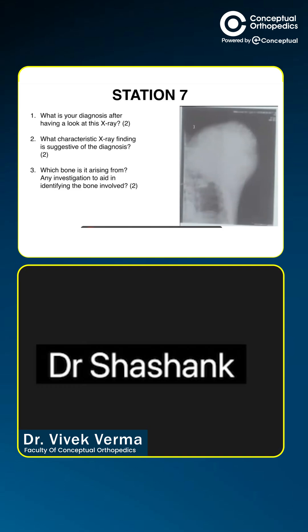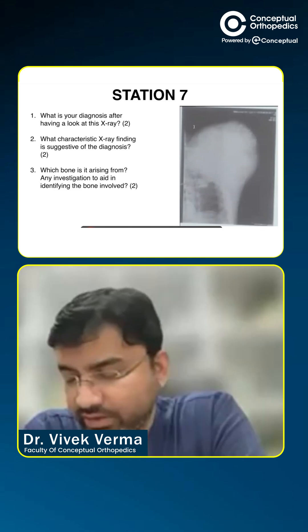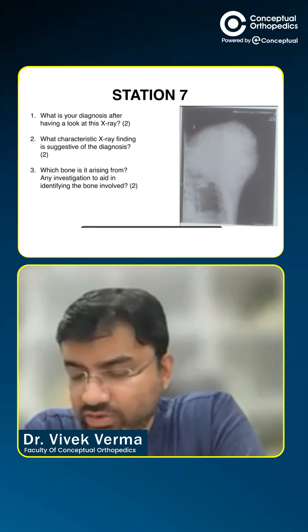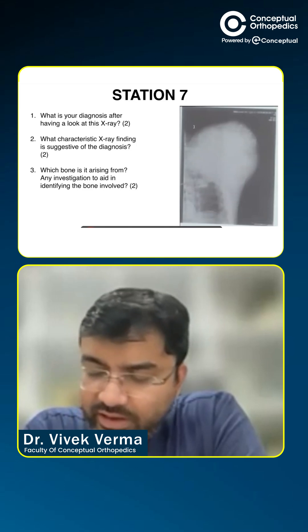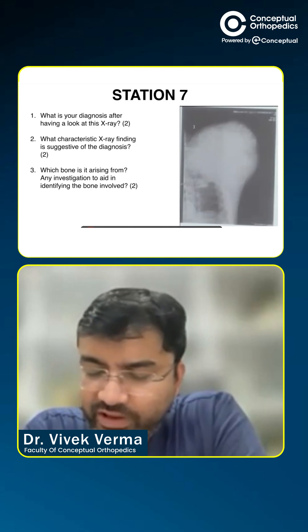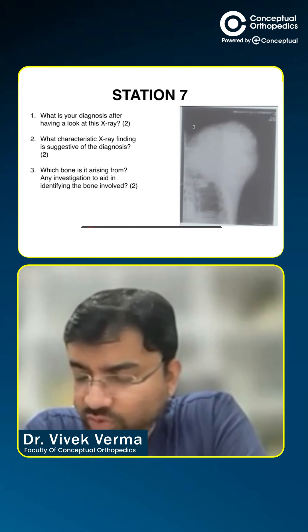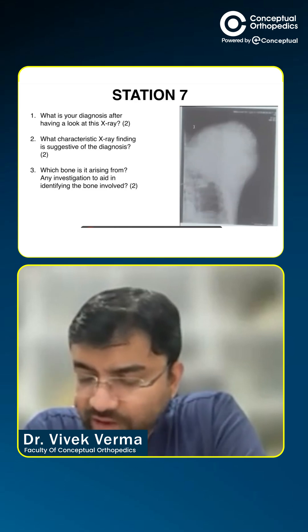The arm appears to be amputated — it's not very clear to me. It looks like a recurrent sarcoma where the arm is amputated and there is overgrowth. I cannot see the arm — can you guys see anything?